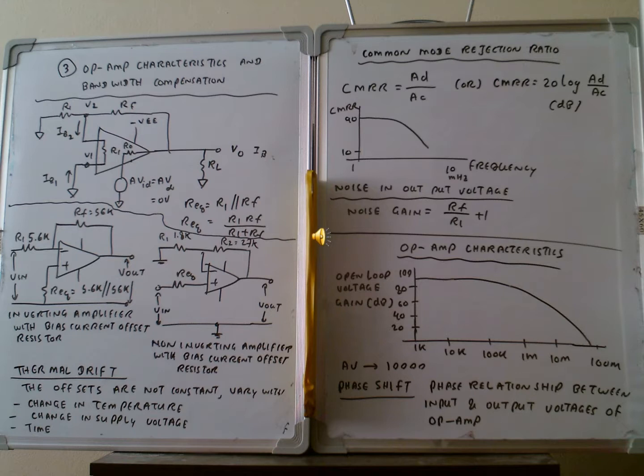The R-equivalent is calculated similarly: R1 parallel with R2, which equals R1 multiplied by R2 divided by R1 plus R2. This is how we calculate the equivalent resistance for this configuration.